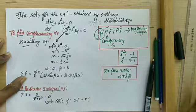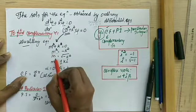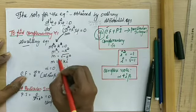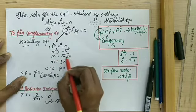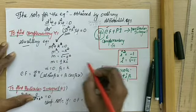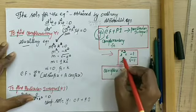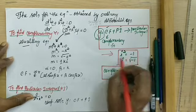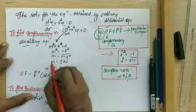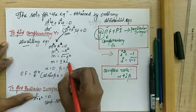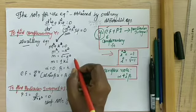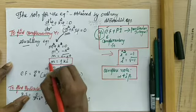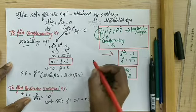From m squared plus k squared equal to 0, we get m squared equal to minus k squared, and therefore m is equal to the square root of minus k squared. Since i squared equals minus 1, or i equals the square root of minus 1, we write m equal to plus or minus ki. The term we obtain takes the form of complex roots.